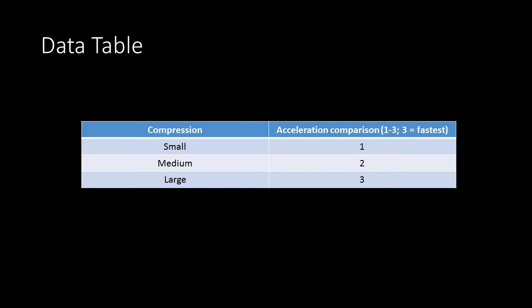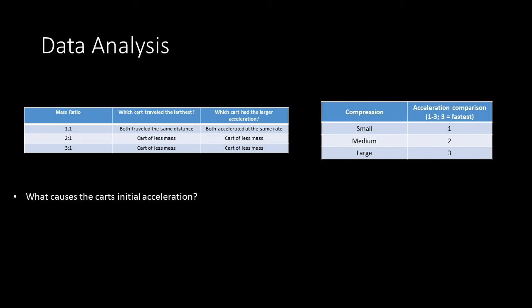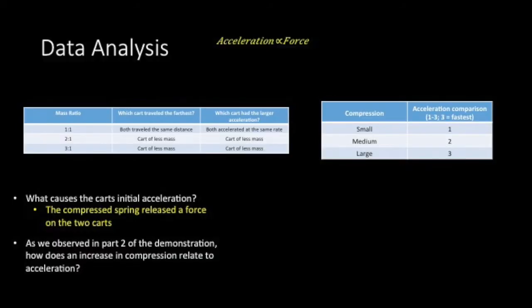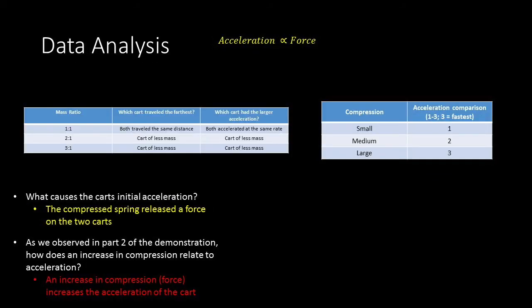So now in your notebooks, write down what you think is the relationship between acceleration and mass. Let's go over some questions. What causes the cart's initial acceleration? It was the compressed spring releasing a force on the two carts. Remember the two observations you made in your notebook? Pull one of those out. How does an increase in compression relate to acceleration? An increase in compression is an increase in force. Therefore, an increase in force increases the acceleration of the cart.